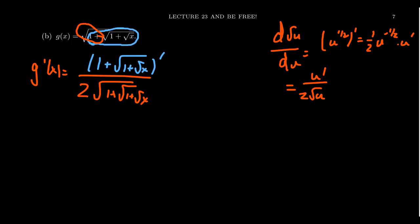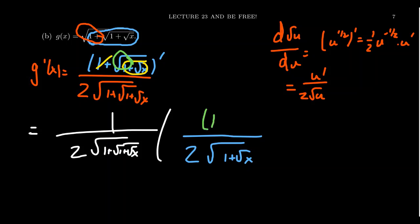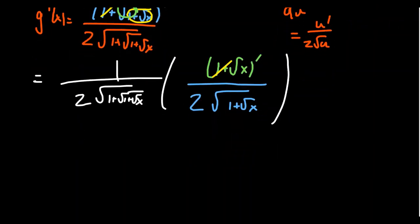Taking the derivative of 1 + √(1 + √x): the derivative of the constant 1 is zero, so it disappears. We need the derivative of the square root of (1 + √x), where again we have an inner function inside an outer square root. That gives us, in the denominator, 2 times the square root of (1 + √x), with the inner function (1 + √x) on top requiring its own derivative. The derivative of 1 is zero again, and so we're left with the derivative of √x, which is 1 over 2√x.